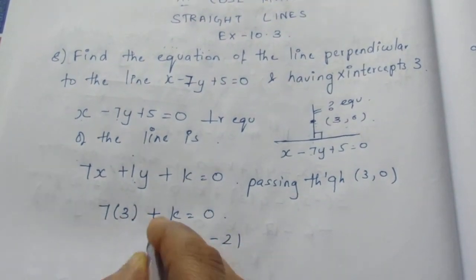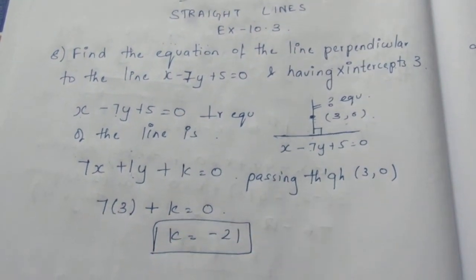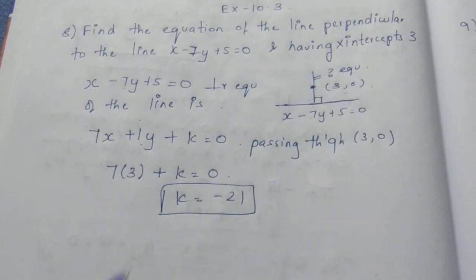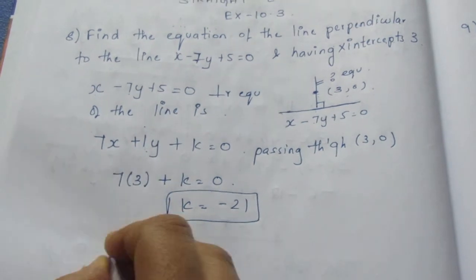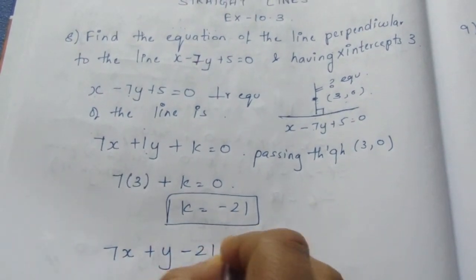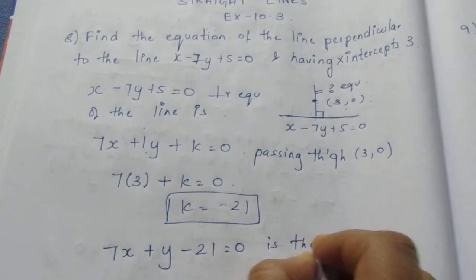This becomes 21. If 21 comes to this side, it becomes minus 21. So we have found the value of k to be minus 21. Just substitute into the equation. Here it becomes 7x plus y minus 21 equal to 0 is the required equation.